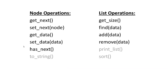There are a number of node operations and list operations that we need to code. For node operations, we need: get_next, set_next, get_data, set_data, and has_next — which returns a Boolean, either true or false, indicating if there is a next node. That returns true for any node other than the last node.